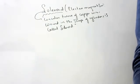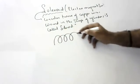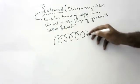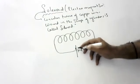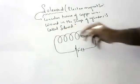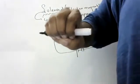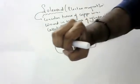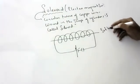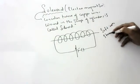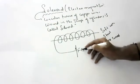A solenoid looks like a spring made of copper wire. Both ends are connected to a battery with a plug and key. Inside the solenoid, you can place either soft iron or steel. Then you pass current by switching on the switch.